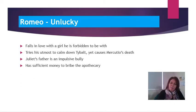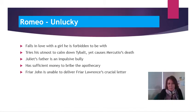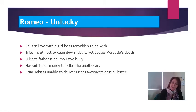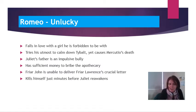Unlucky because he has sufficient money to bribe the apothecary — he has those 40 ducats in Act 5 Scene 1 to buy the poison. Unlucky because Friar John is unable to deliver that all-important letter from Friar Lawrence, which crucially outlines the quite ridiculous and complex plan to fake Juliet's death. Romeo never receives the letter, erroneously believes his wife to be dead, and kills himself just those few crucial minutes before Juliet reawakens in the tomb.